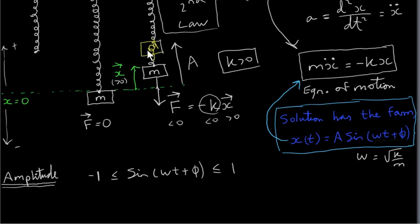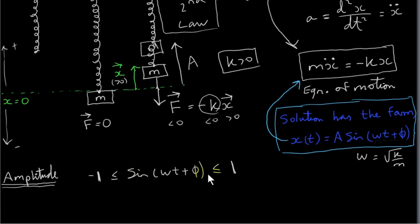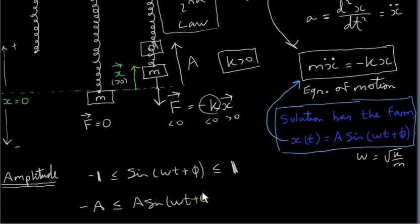To see why that maximum distance is A, we look at the sine function. The sine function always lies between minus one and plus one, regardless of the angle — this is also true for the cosine function. Multiplying through by A, we get minus A is less than or equal to x(t), which is in turn less than or equal to A. So the position x(t) always lies between minus A and plus A.